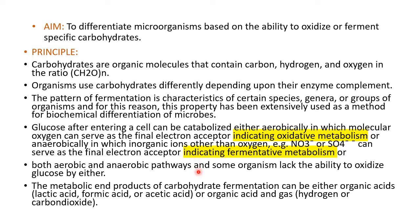Some organisms use both aerobic and anaerobic pathways, and some lack the ability to oxidize glucose by either. Some organisms are obligate aerobes, some are obligate anaerobes, while some are facultative anaerobes — meaning they can survive in environments where oxygen is not present and thus can follow the fermentative pathway. The metabolic end products of carbohydrate fermentation can be either organic acids like lactic acid, formic acid, or acetic acid, or organic acids and gases such as carbon dioxide and hydrogen.